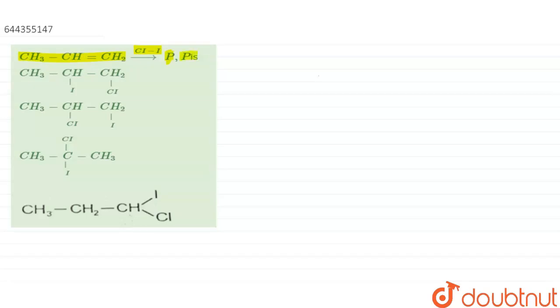We have to tell what is the product P. Let us write the reaction that is CH3-CH double bond CH2 in presence of CLI gives a product P. We have to tell what is the product P and we have been given 4 options.